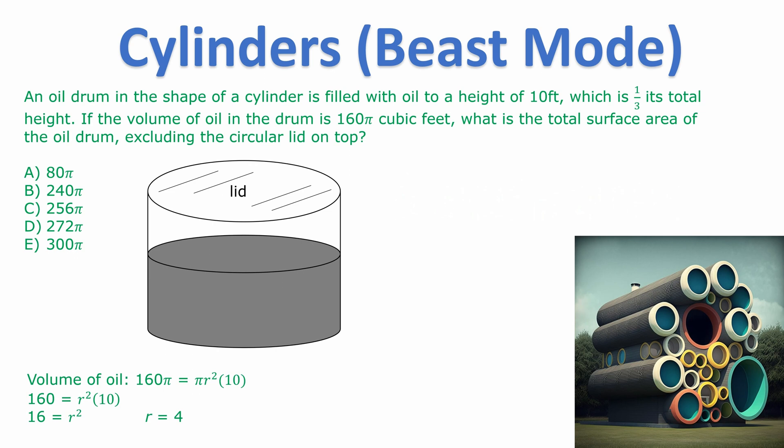Anyway now we're going to use the curved surface area formula but first we notice that it said it was filled to a height of 10 which is a third its total height. So the actual height of the oil drum is 30. 10 times 3.